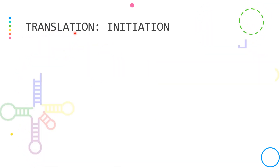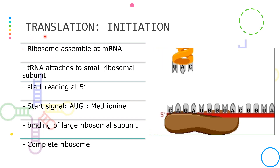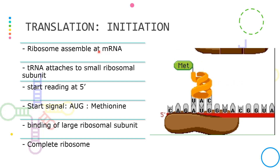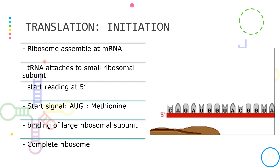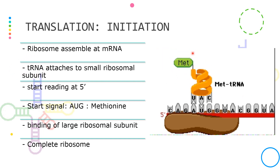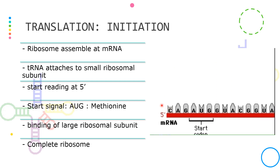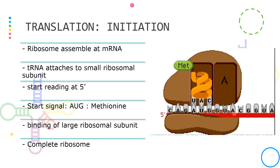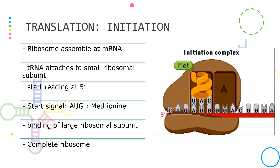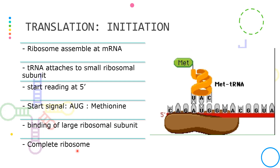Let's now start with the process of translation. The first phase is initiation, which is when the separate subunits of the ribosome floating in the cytoplasm assemble at the mRNA. It starts when the tRNA bound to methionine attaches to the small subunit of the ribosome. When it encounters the mRNA, it starts reading at the 5' end, looking for the start signal, which is AUG. This binds the large subunit of the ribosome, completing it and making the initiation complex. Once the ribosome is complete, protein synthesis can start.